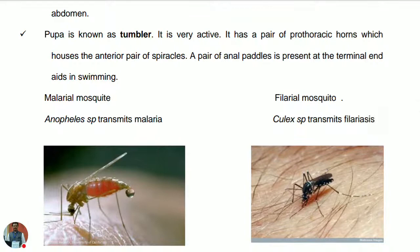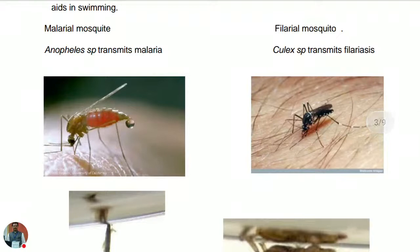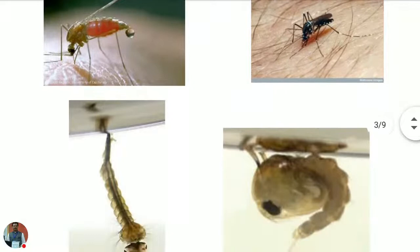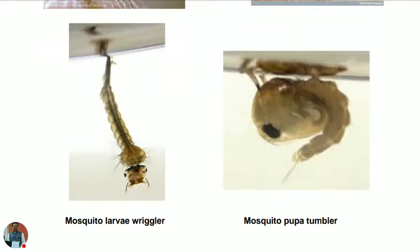Two types of mosquitoes: on the left is the malarial mosquito with the genus Anopheles, and on the right is the filarial mosquito, genus Culex, which transmits filariasis. The larva of mosquito is called the wriggler and the pupa is called the tumbler.